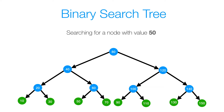Now let's look at the search operation. Here we're searching for a node with value 50. Starting from our root node 80, we ask if 50 is equal to 80. Since 50 is not equal to 80, we ask if 50 is less than 80. Well, 50 is less than 80, so we'll go to the left.